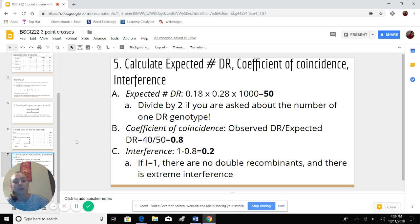And then to calculate the interference, you do one minus the coefficient of coincidence. So one minus 0.8 is 0.2. And you'll probably be asked to interpret this value of interference. So if interference equals one, then there are no double recombinants because it would be one minus zero. And this means that there's extreme interference. So the ability to double cross is interfered with. So that's how you would explain that.